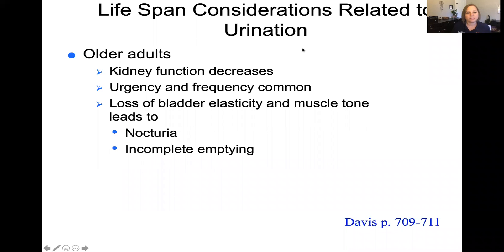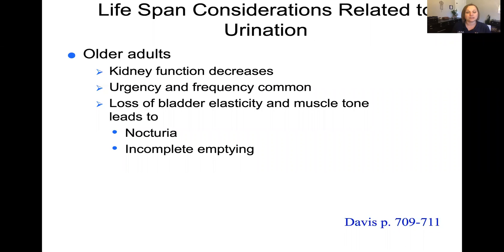With the older population, we see physiologic changes related to urination. Kidney function decreases over time. Urgency — a sense that you need to go — and frequency — needing to go often — are very common, related to loss of bladder elasticity and muscle tone. This can lead to nocturia, which means getting up to void frequently at night, or incomplete emptying where the bladder is not completely emptied when the patient does void.